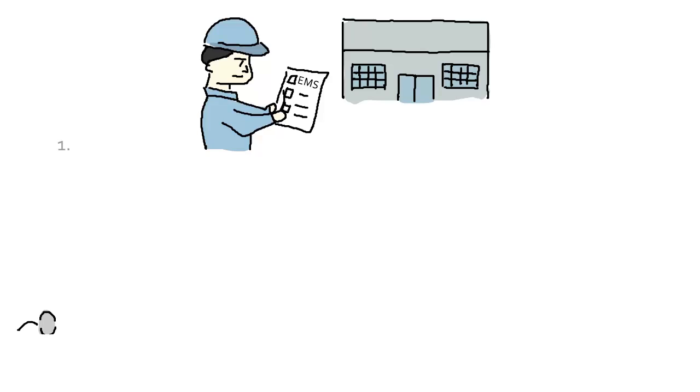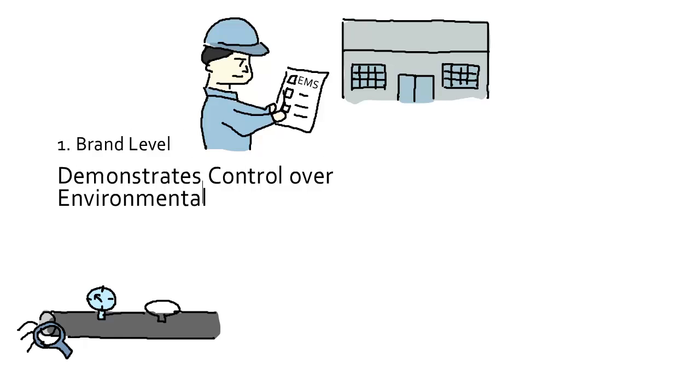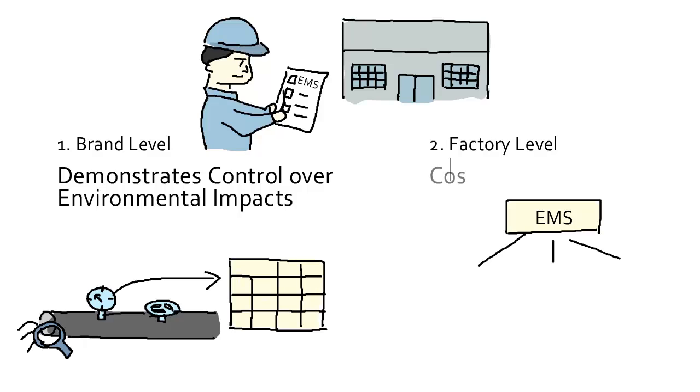First, at the brand level, it demonstrates your factory is taking steps to control its impact, and that you have the data to back up your claims. And second, at the factory level, an EMS can save money by helping you to reduce waste, energy, and water in your factory.